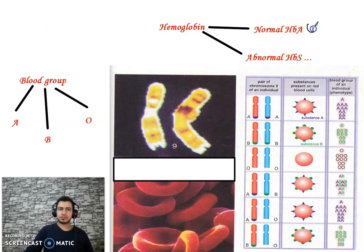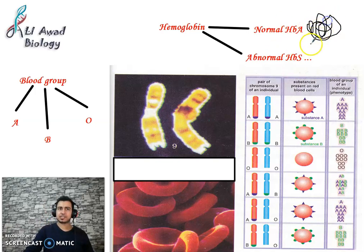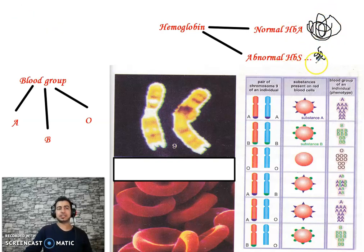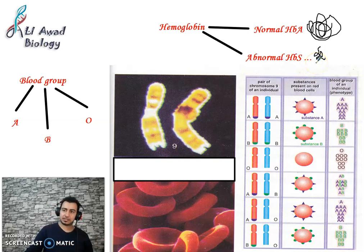HbA is a normal protein that carries oxygen and carbon dioxide. However, HbS is abnormal hemoglobin and does not carry oxygen and carbon dioxide properly.